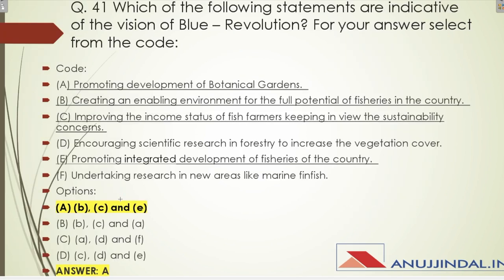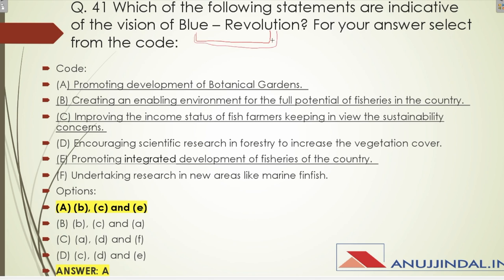Question 41: Which of the following statements are indicative of the vision of the Blue Revolution? First, you need to know that blue revolution refers to intense growth in the worldwide aquaculture industry. The correct statements are: promoting development of botanical gardens — very true; creating an enabling environment for the full potential of fisheries in the country — very true; improving the status of fish farmers — very true; and promoting integrated development of fisheries of the country — also true. The correct option is A, B, C, and E.